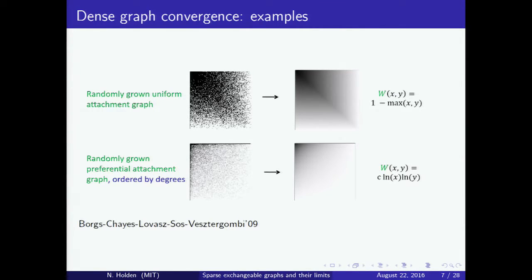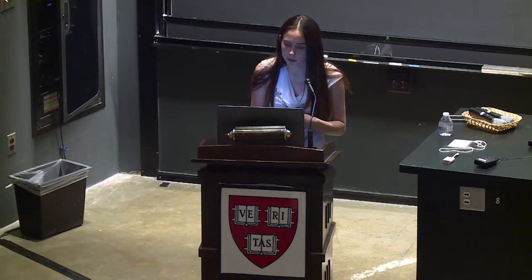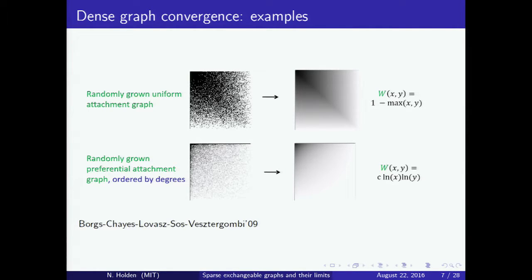On the top you can see a randomly grown uniform attachment graph. These random graphs are defined by adding vertices one by one; when we add the nth vertex, we look at all pairs of vertices not currently connected and connect each such pair with probability 1 over n. On the lower part you can see random graphs grown by preferential attachment, defined by choosing n vertices and m edges, starting with n isolated vertices, then adding the m edges one by one where the probability of connecting two vertices depends on their current degree.